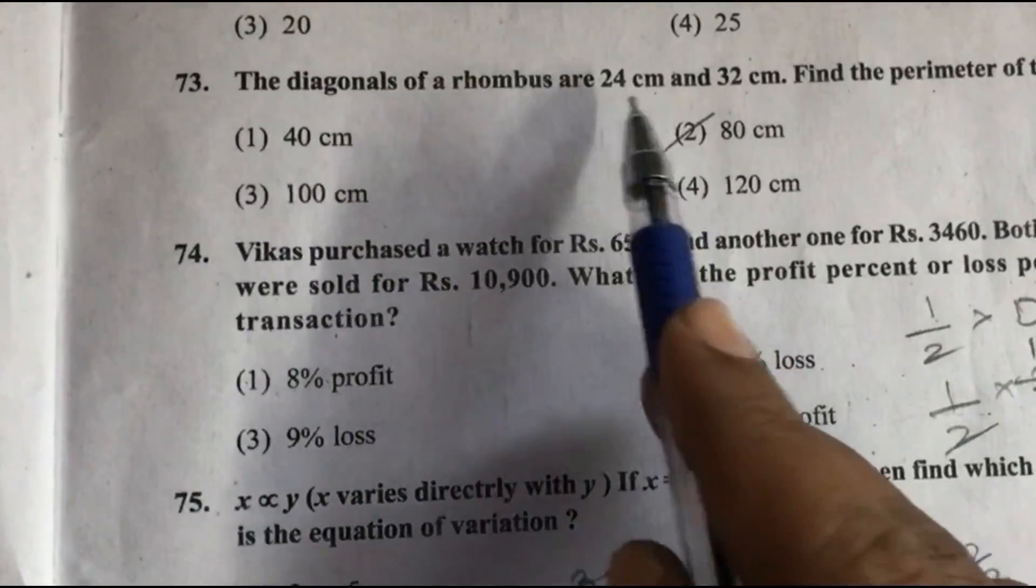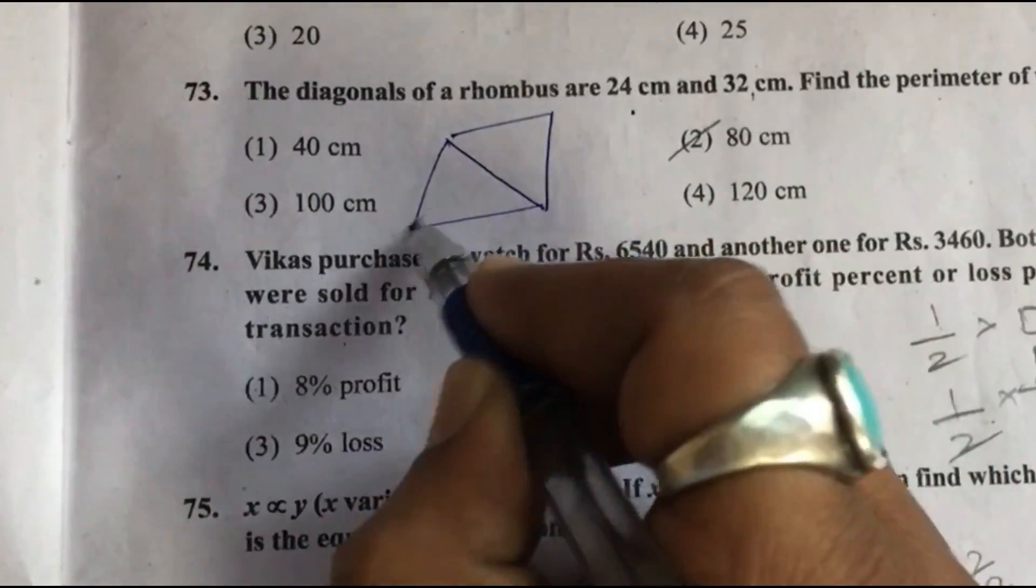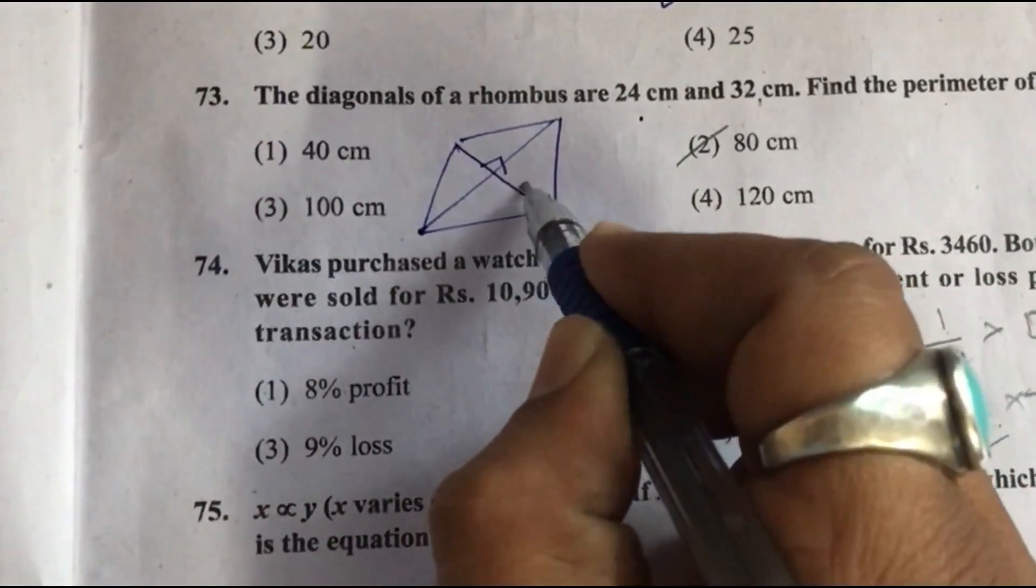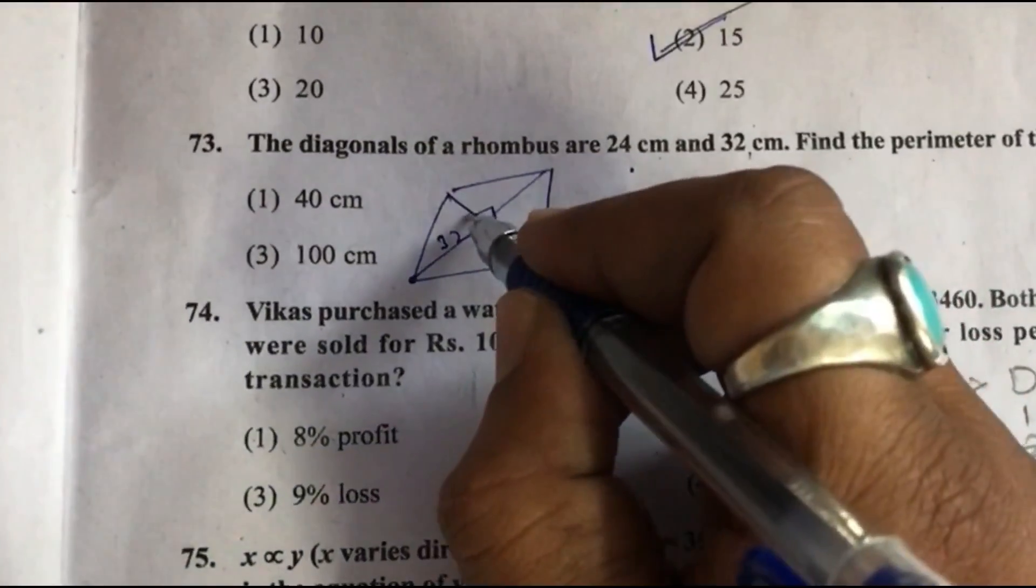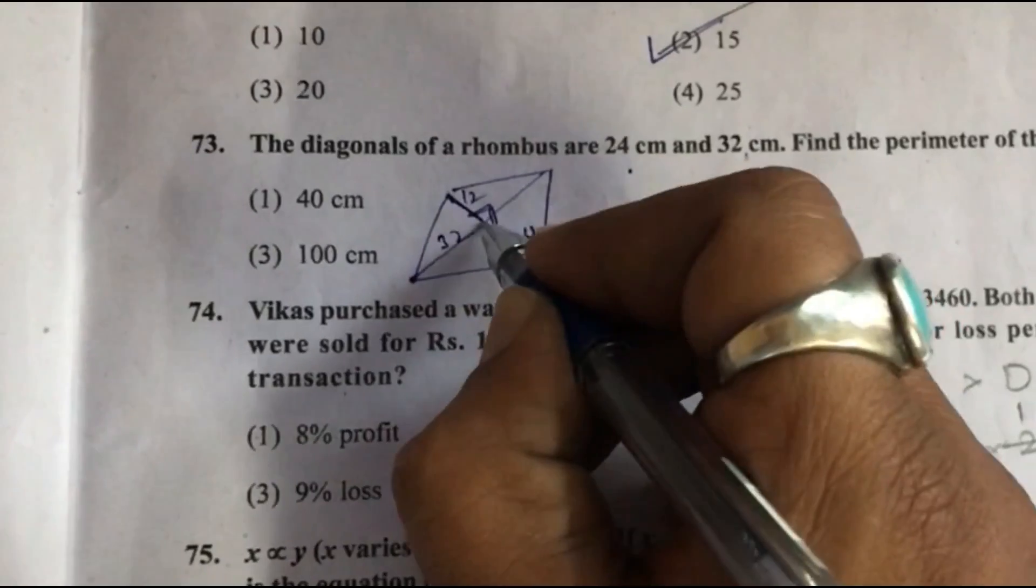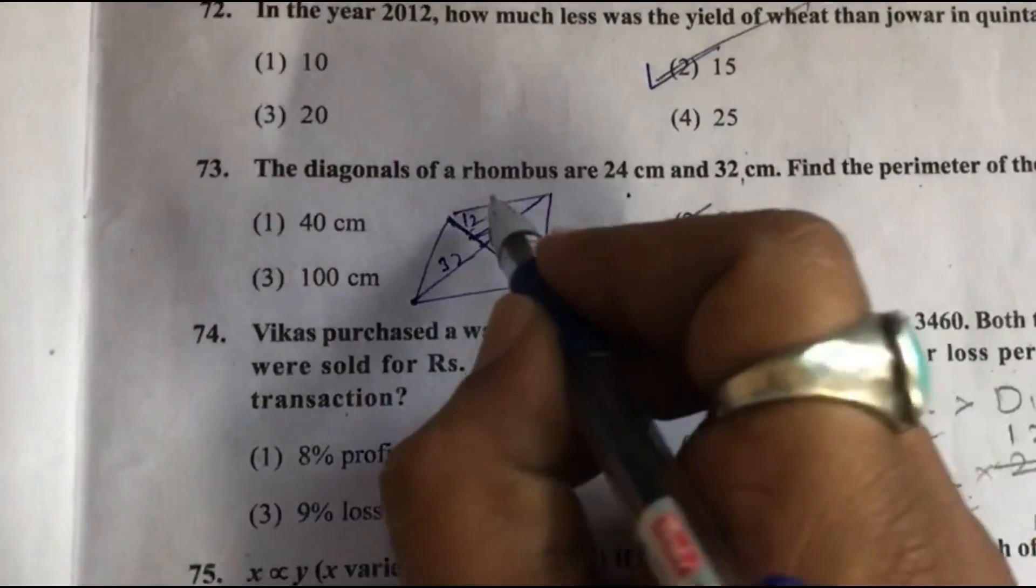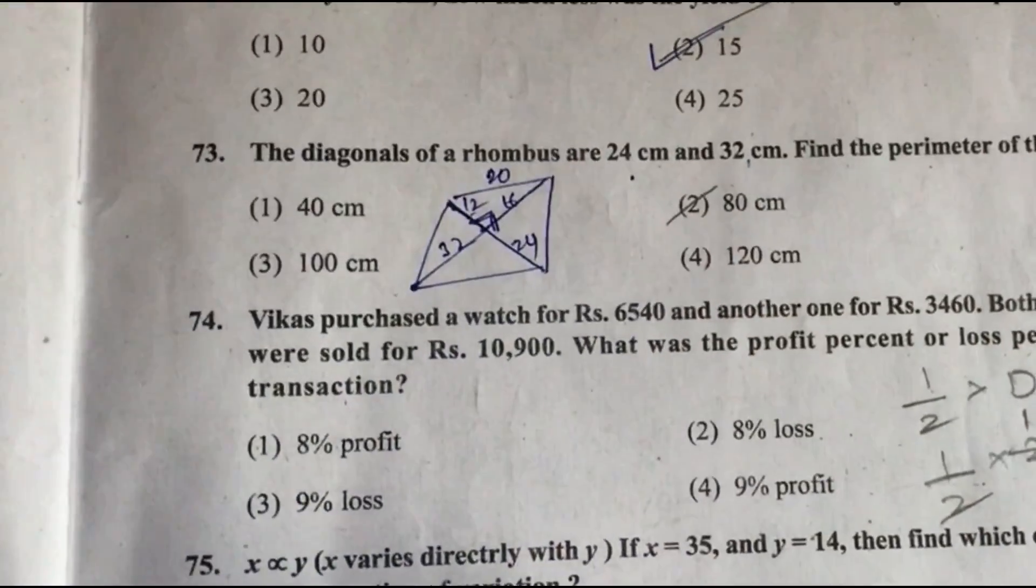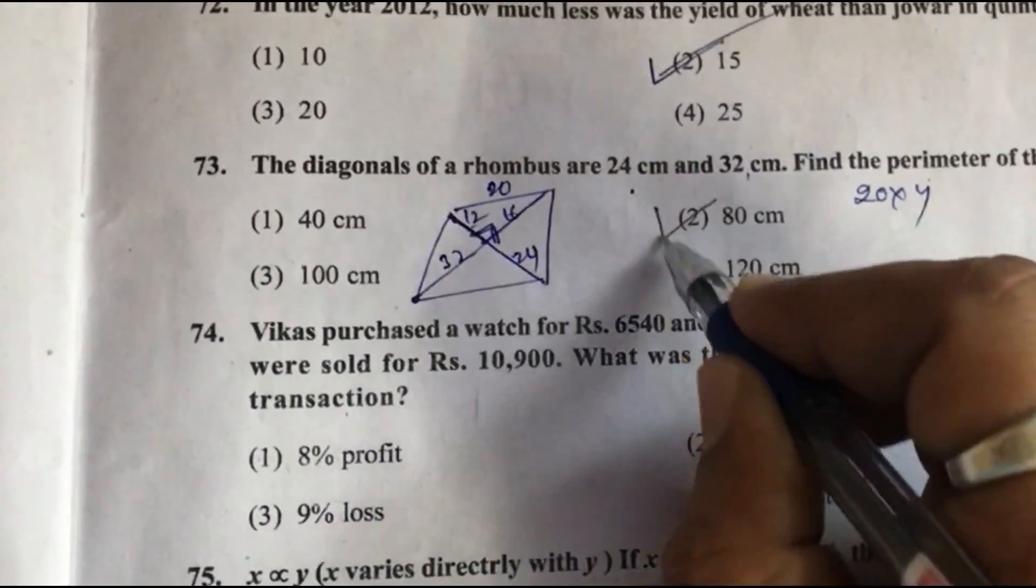Question 73: Diagonals of rhombus are 24 and 32 centimeter. Find the perimeter. Diagonals are perpendicular bisector of each other, so this is 12 and this part is 16. By using Pythagoras theorem, we will find side equals 20. So perimeter is 20 into 4 equals 80 centimeter.